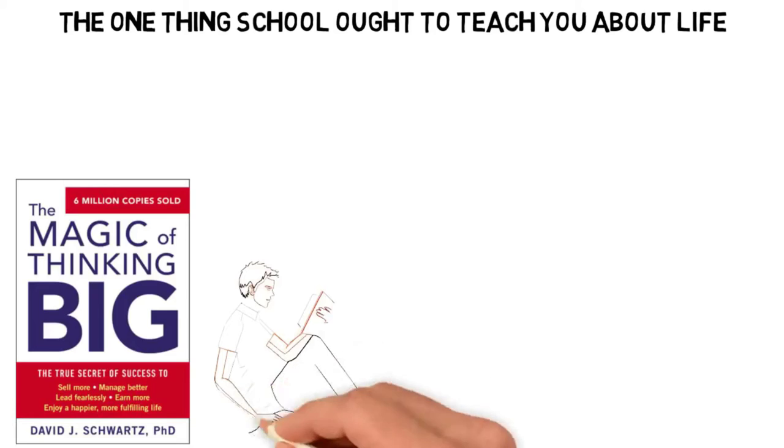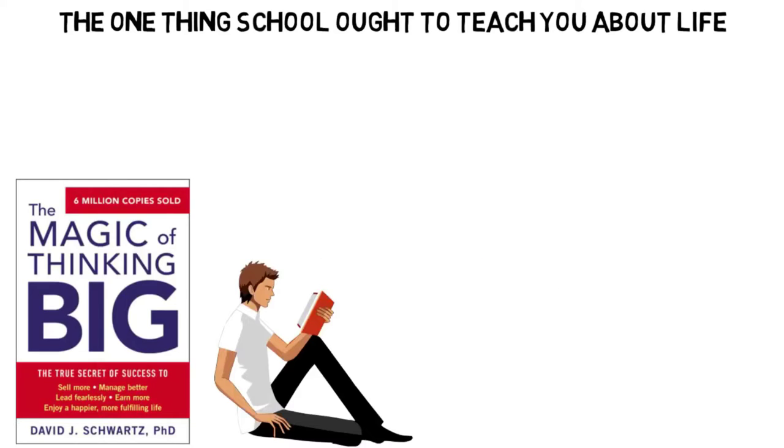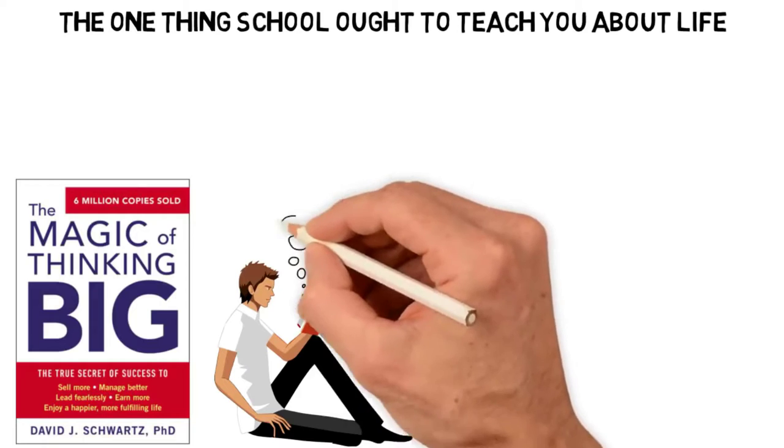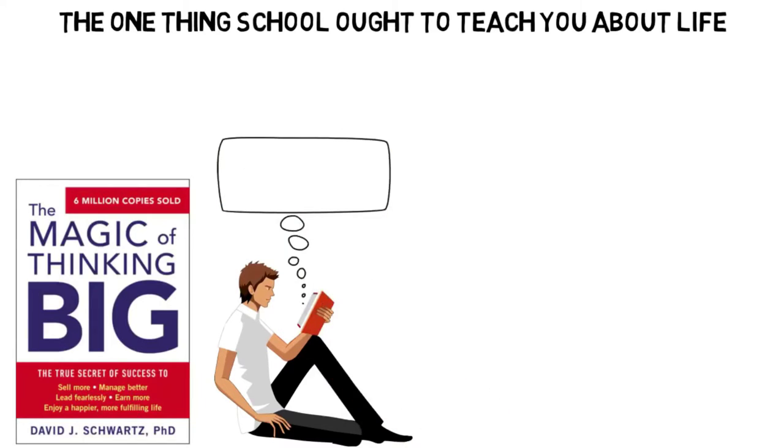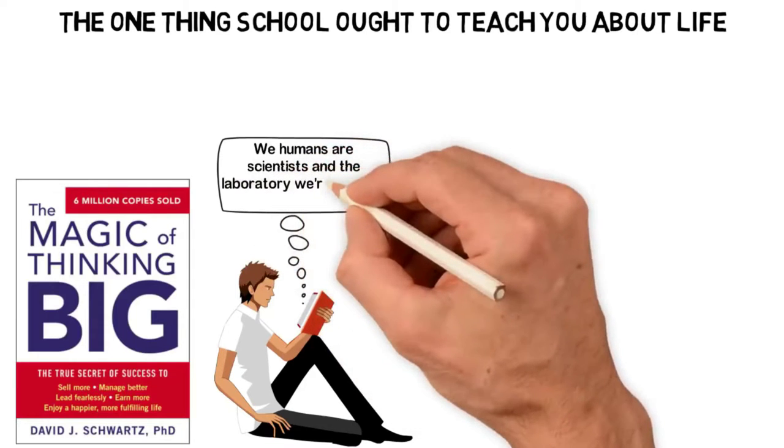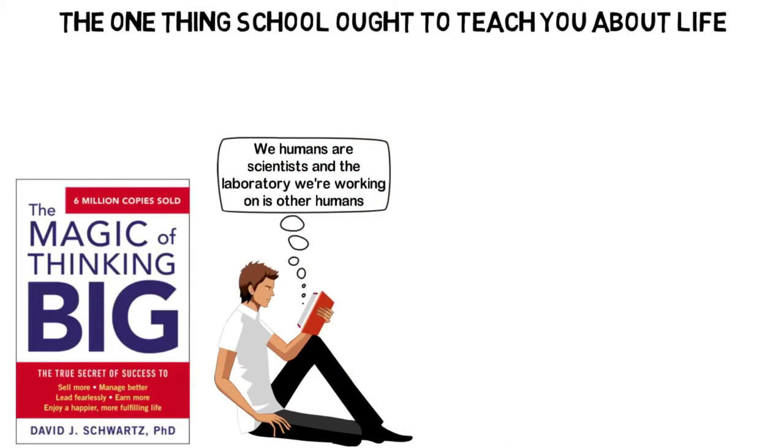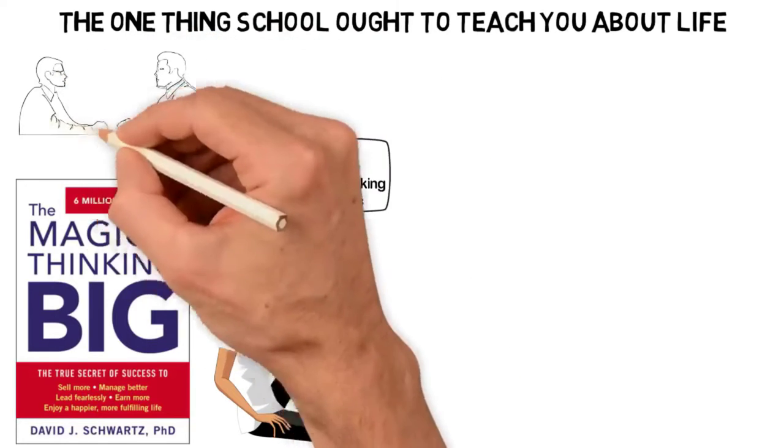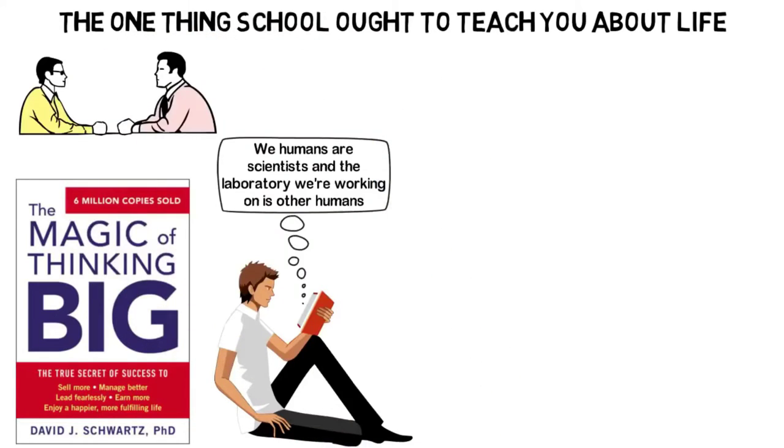Just like any other book you read, it's only one or two points in the entire book that will stay with you for long. What actually stayed with me is a statement that goes like: We humans are scientists and the laboratory we are working on is other humans. The author went on to explain how almost everything in our lives is determined by how much we are able to deal with other humans.